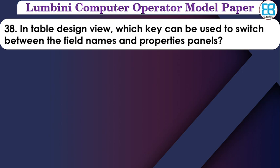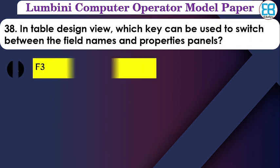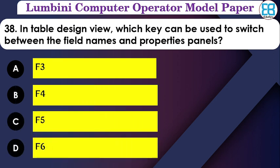In table design view, which key can be used to switch between the field name and the properties panel? The options are F3, F4, F5, F6. The correct answer is F6.